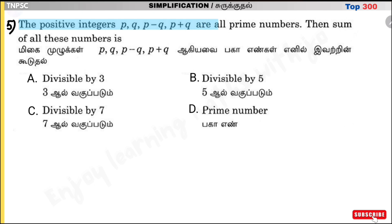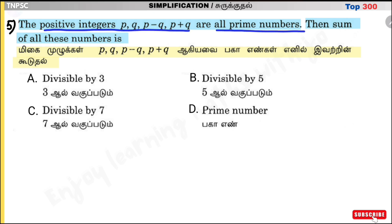Question number 5. The positive integers PQ, P−Q, P+Q, PQ are all prime numbers. Find the sum of all these numbers. We know prime numbers are 2, 3, 5, 7, 11... We try values: if p = 3, q = 2, then p−q = 1 which is neither prime nor composite. So that selection is incorrect.